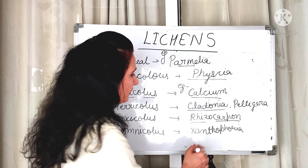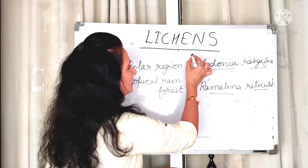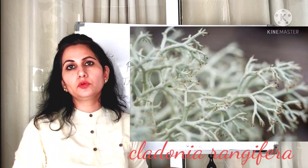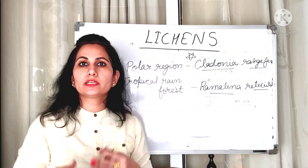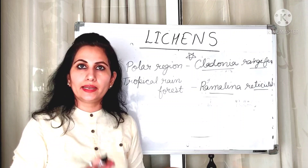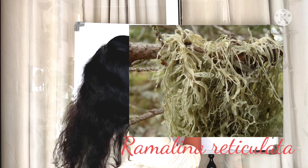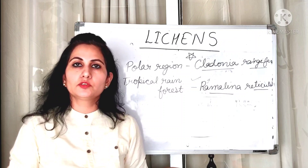Omnicolous lichens can be found anywhere — on teeth, on glass, on bones — and an example is Xanthophoria. Some lichens are found in the polar region where there is a lot of ice; an example is Cladonia rangifera, also known as reindeer moss. This is an important question that comes up repeatedly in competitive exams like NEET and NET. Lichens found in tropical rain forests are exemplified by Ramalina reticulata.